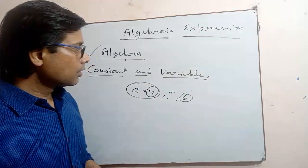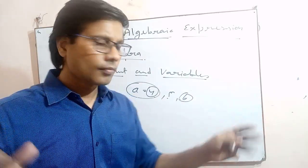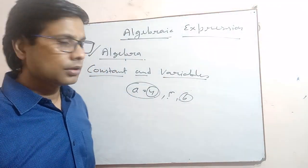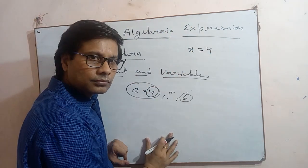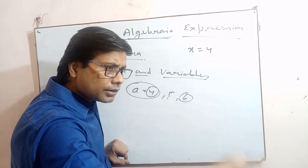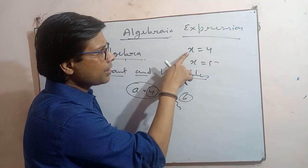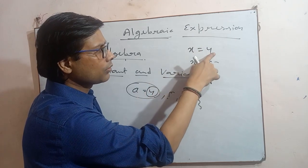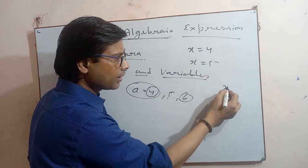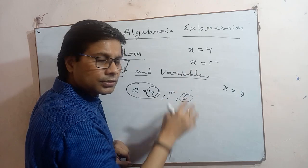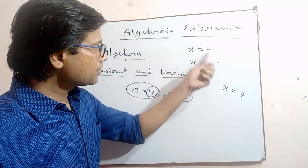A variable is something whose numerical value varies — it changes. For example, in one question x is 4, and in another question x is 5, and somewhere else x is 7. So every time x changes. Wherever the numerical value is changed, that is called a variable.